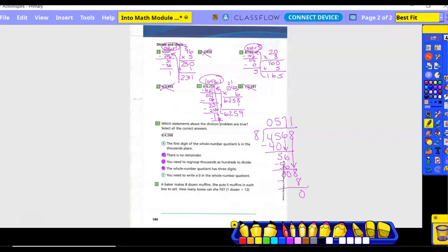You need to write a zero in the whole number quotient. No. There is a zero, but is it amongst the other three numbers? No. No. So technically, does that zero, if you would go to write the answer, would you add it? No. No. Okay. It's not needed.